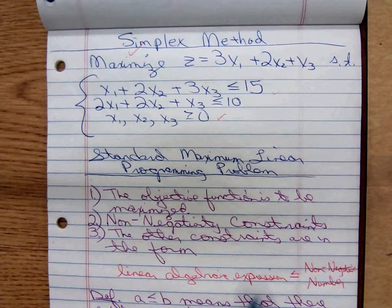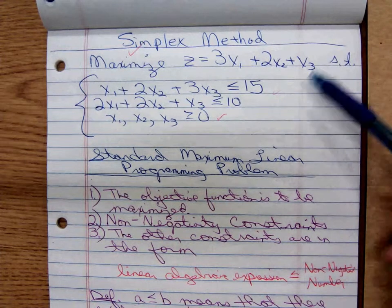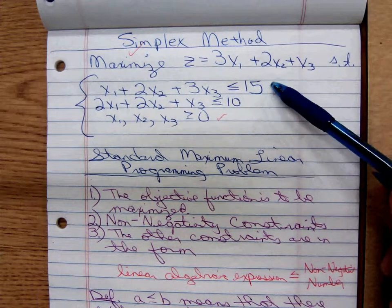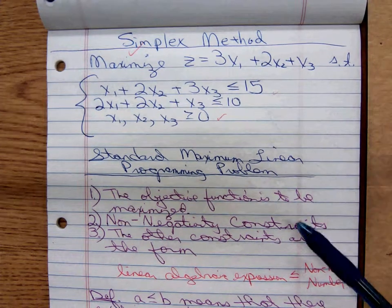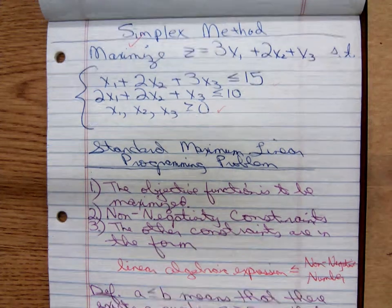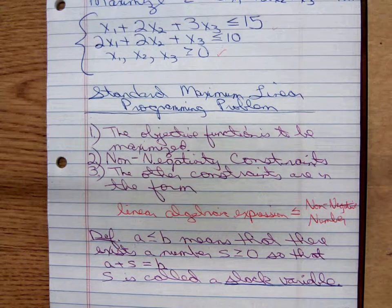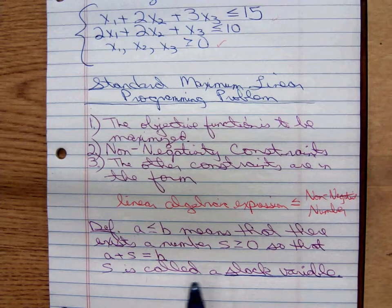The first thing we'll do when using the simplex method is we're going to rewrite the inequalities involving less than or equal to as equations. So, we should look at the formal definition of less than or equal to.